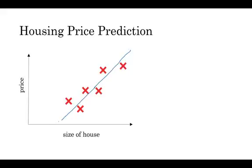But to be a bit fancier, you might say, well, we know that prices can never be negative, right? So instead of a straight line fit which will eventually become negative, let's bend the curve here, so it just ends up zero here. So this thick blue line ends up being your function for predicting the price of a house as a function of size. So it's zero here and then there's a straight line fit to the right.